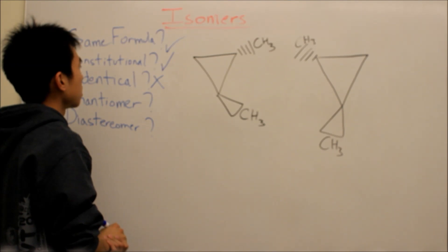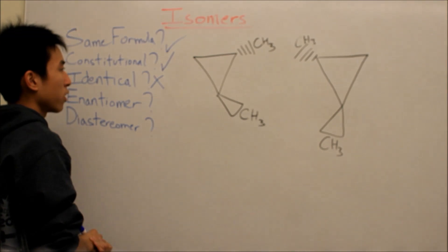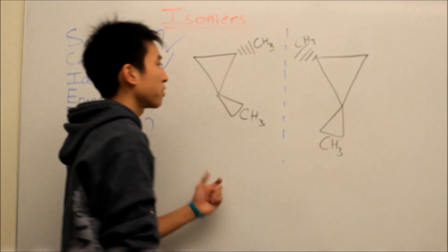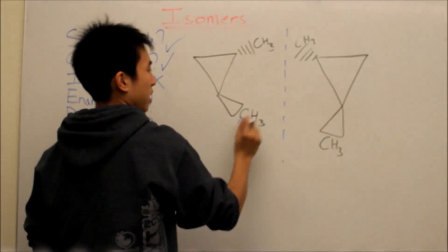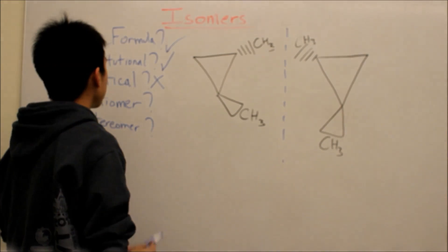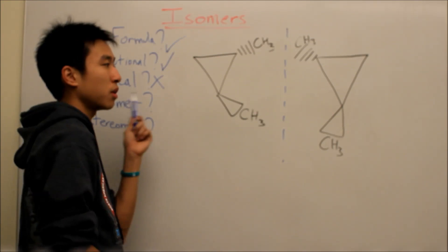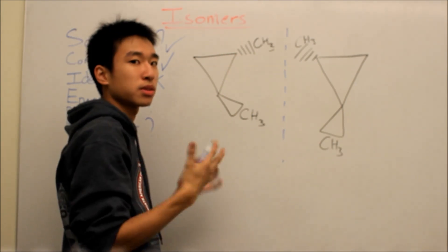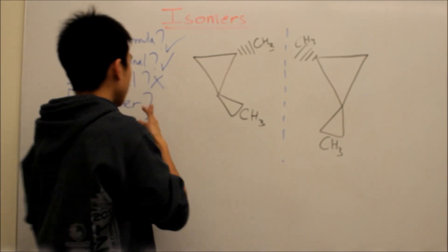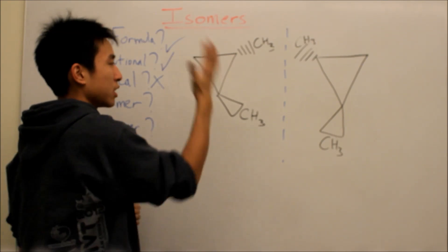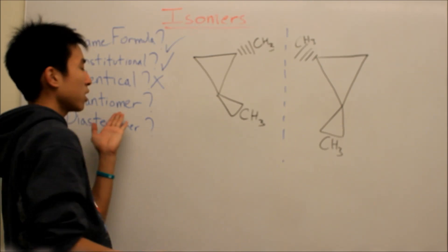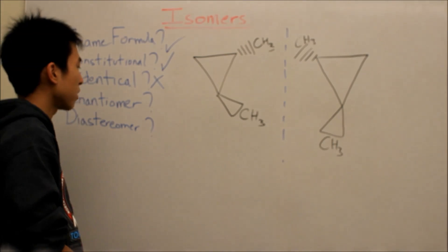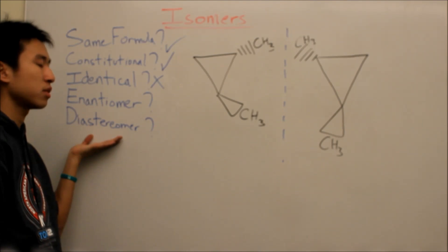Are they enantiomers? When you draw a line down the middle for the mirror, you can see that they're perfectly mirrored images of each other — wedge, wedge, dash, dash. Because we already did the identical check, we know this molecule can't superimpose onto this molecule. So it's not the same molecule. It has a mirror image and it's not superimposable — that's the definition of an enantiomer. You don't have to worry about whether it's a diastereomer.